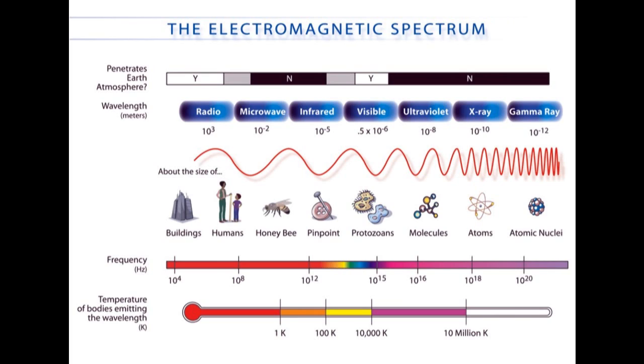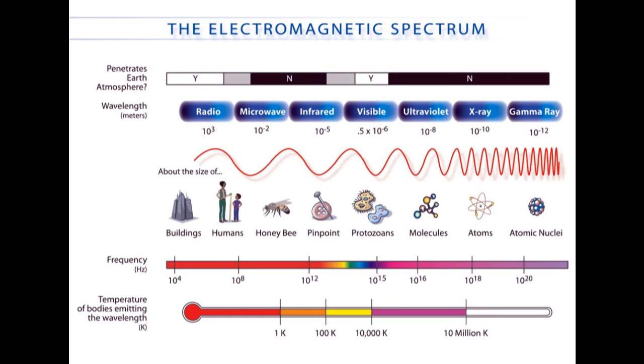When a photon strikes a semiconductor atom, it transfers its energy to an electron. If the photon has enough energy, it will excite the electron from the valence band to the conduction band. In this animation, the orange sphere is one silicon atom in a crystal. The gray dots around it are electrons in the valence band. When the photon strikes the atom, one of the electrons gains more energy and moves farther away from the atom.